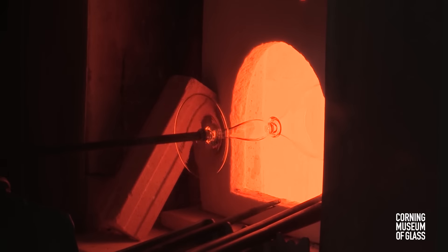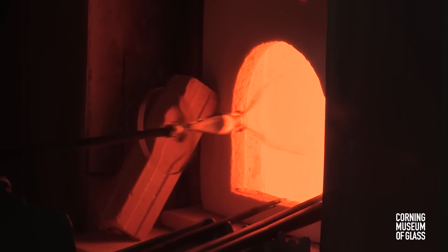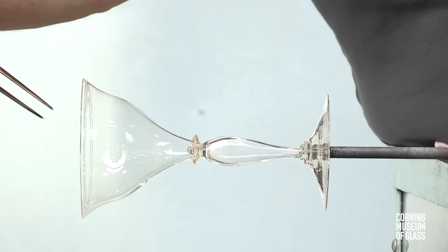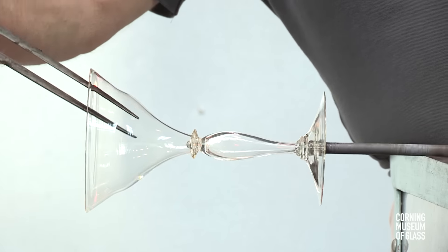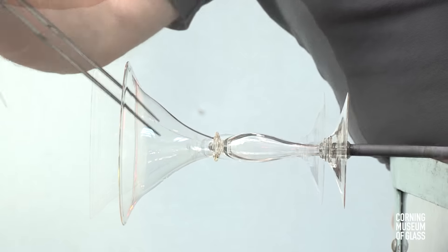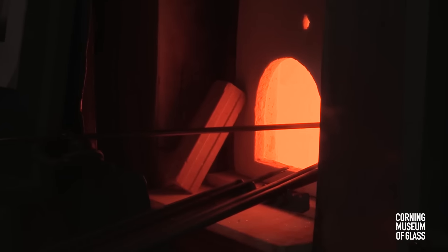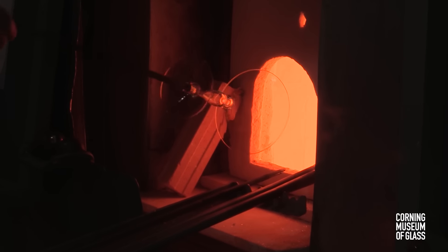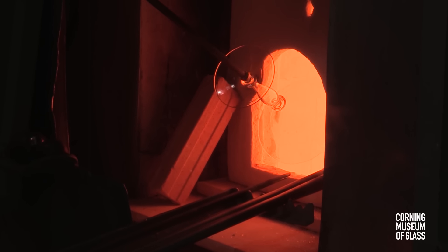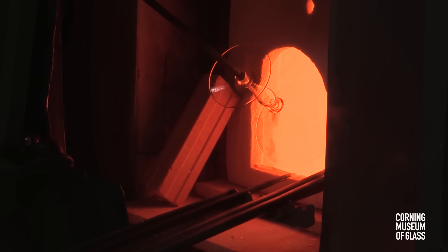The final form of the object is created with a combination of reheating, tooling, and spinning the punty to create centripetal force to give a beautiful exponential flare at the rim.